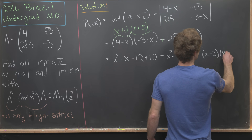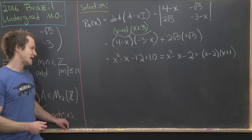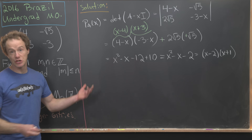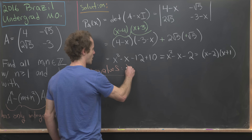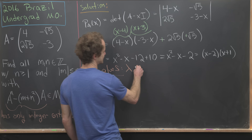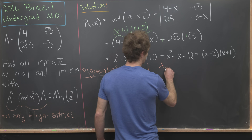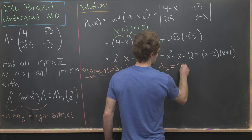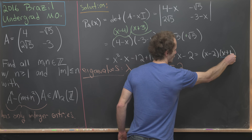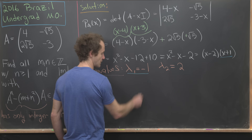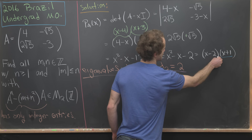We can factor x² − x − 2 as (x − 2)(x + 1), giving us two distinct eigenvalues: λ₁ = −1 and λ₂ = 2.